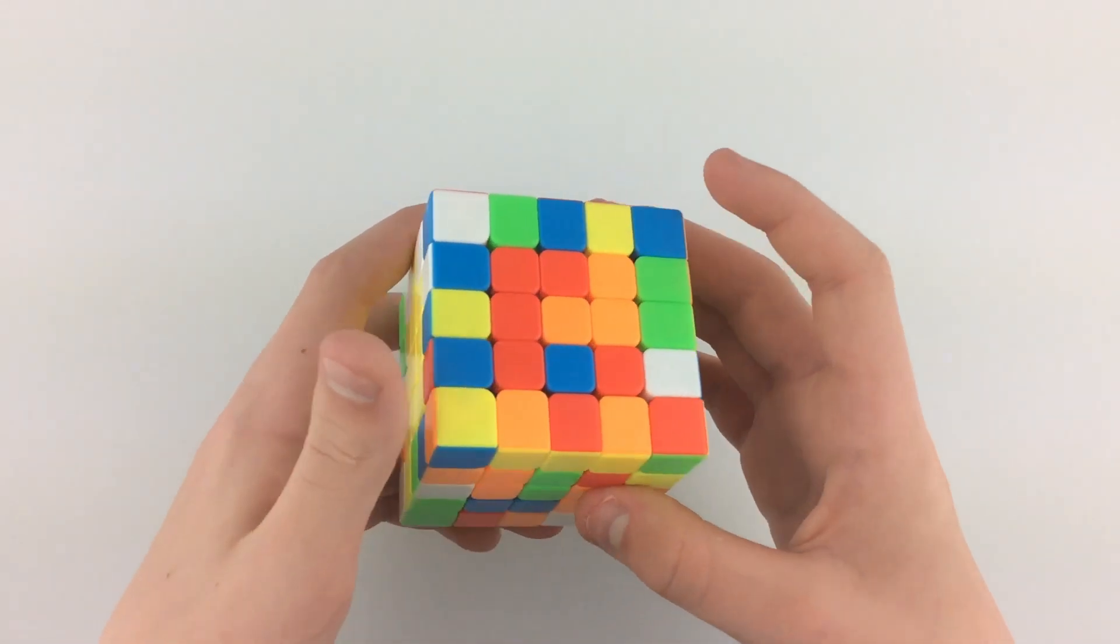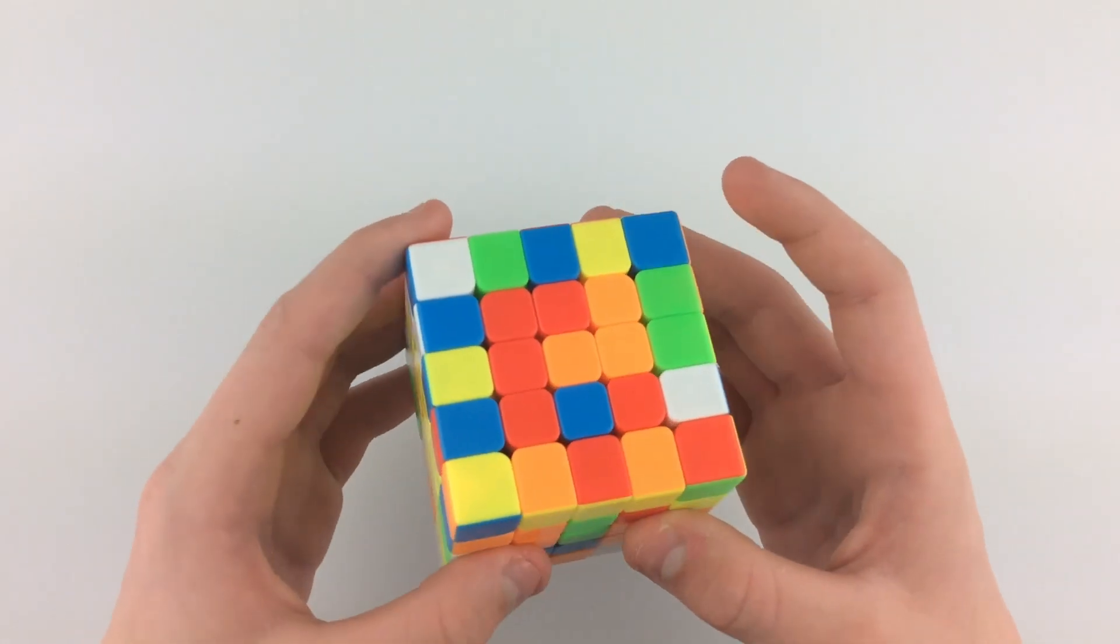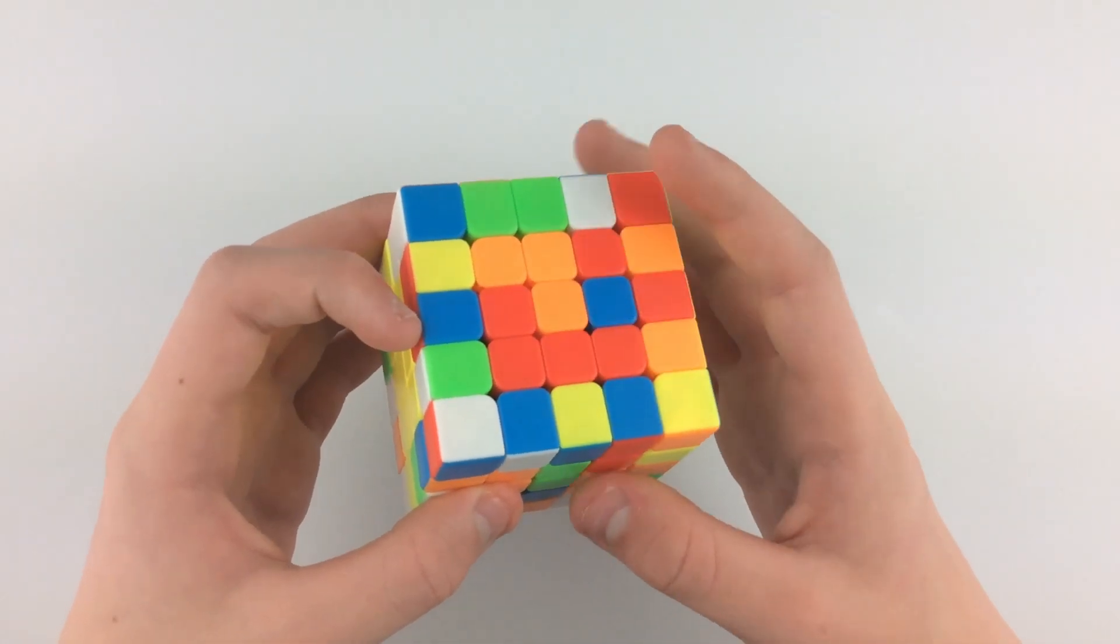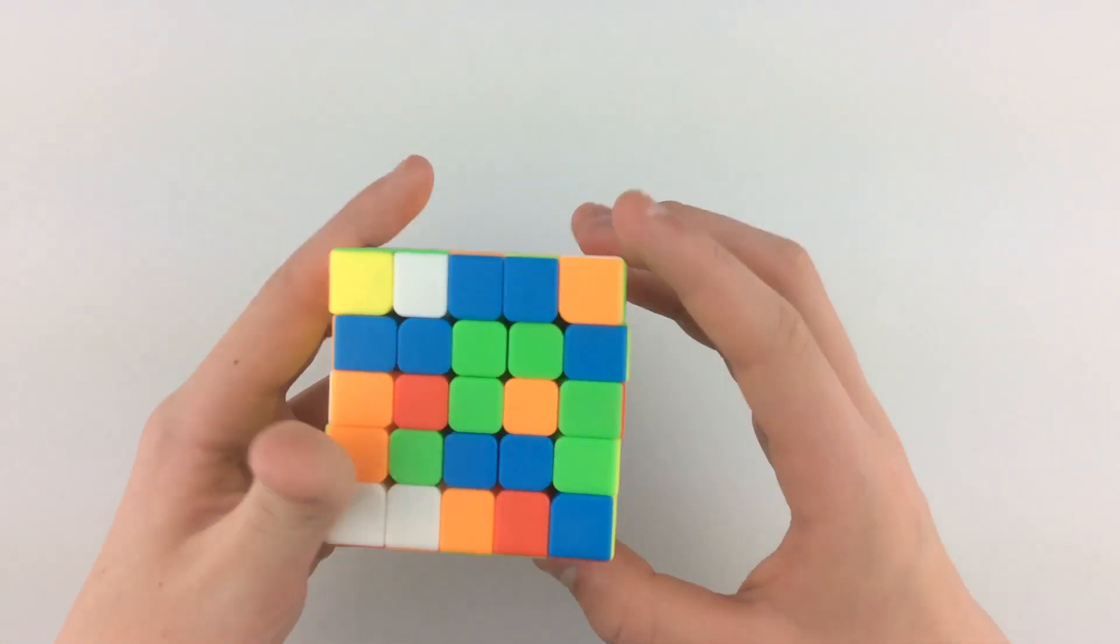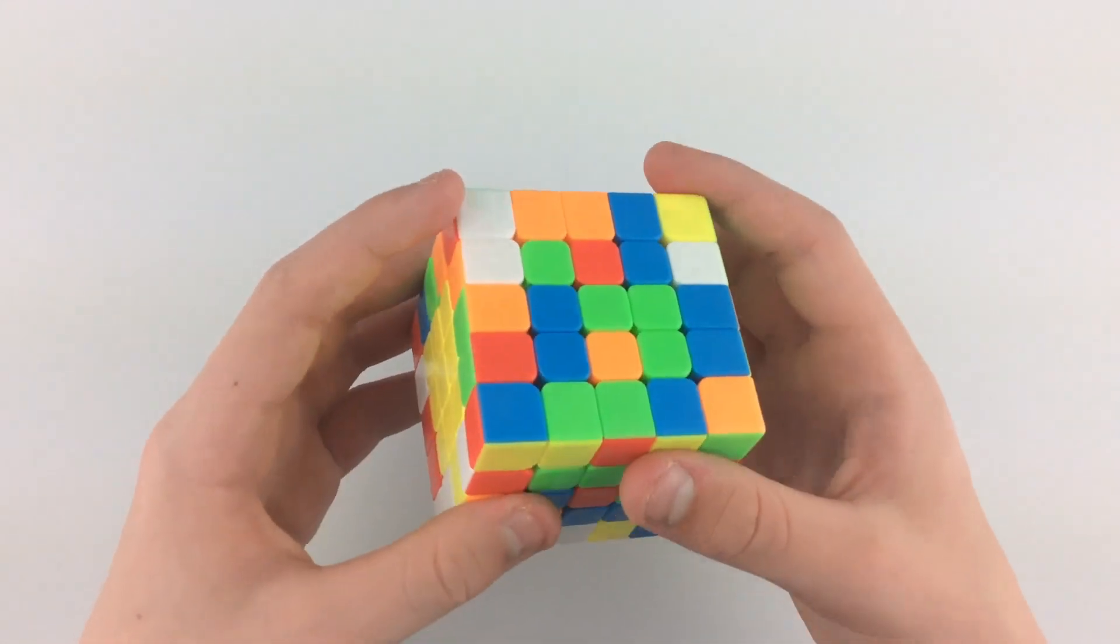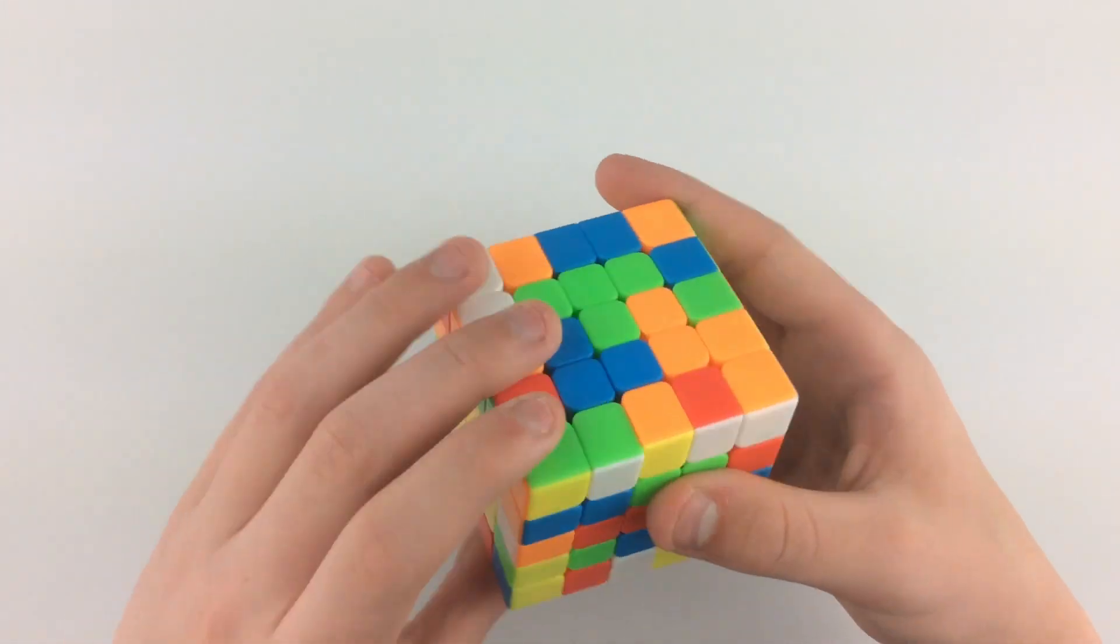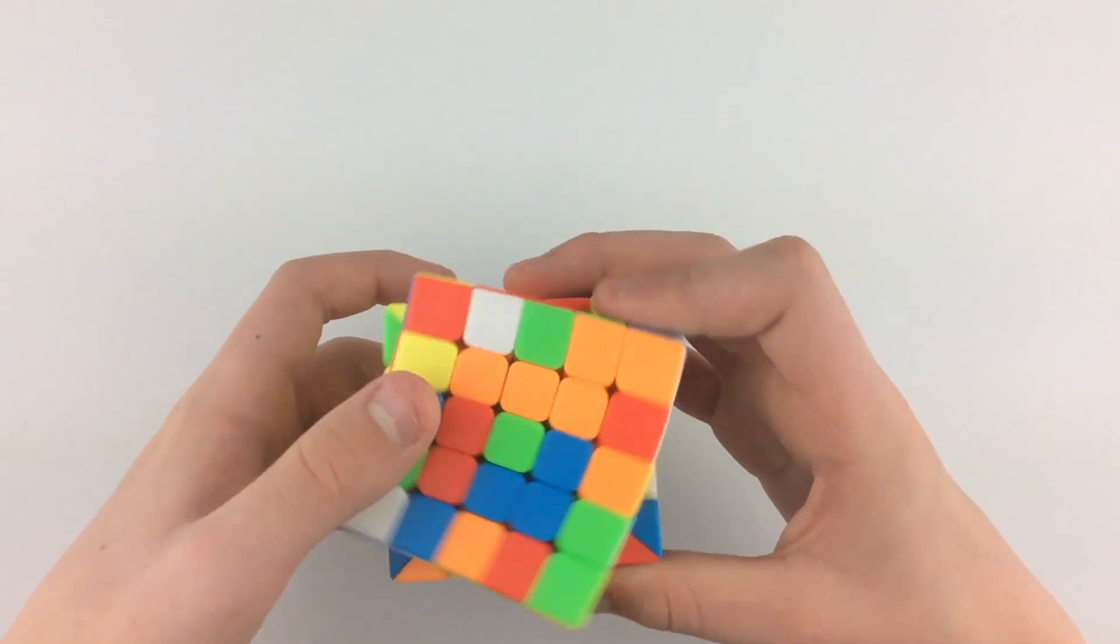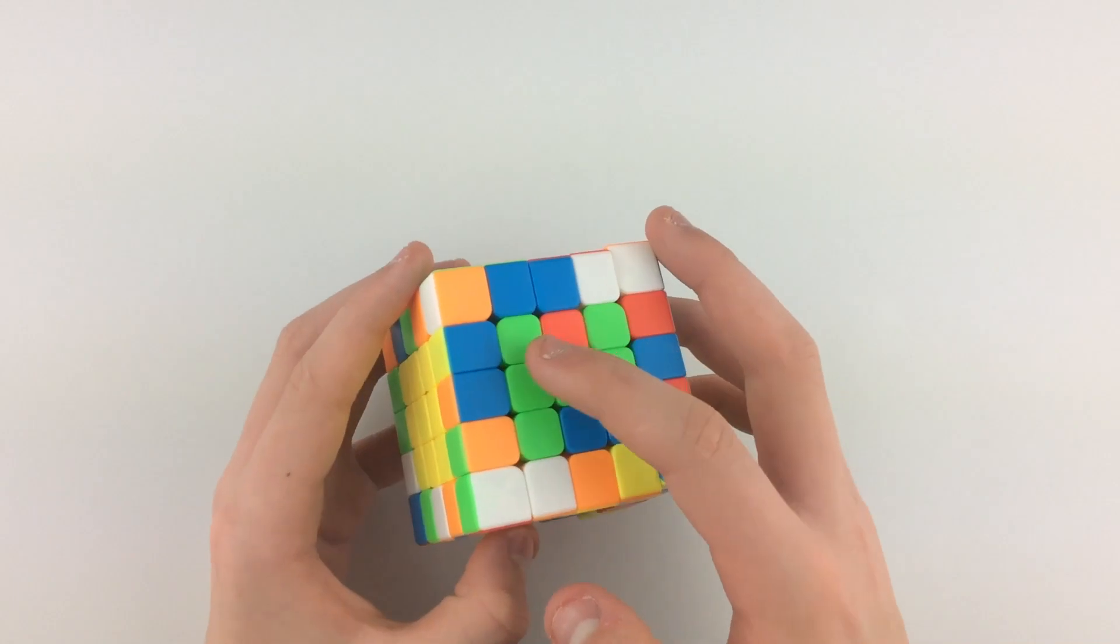So here I'd probably go for orange since I see three 2x1 blocks. I can just insert that one, and then do a U' and insert this one. Now I see the corner here. Now I'd look down, I could insert this one, and I'll insert the other one. And now I actually have the T shape.